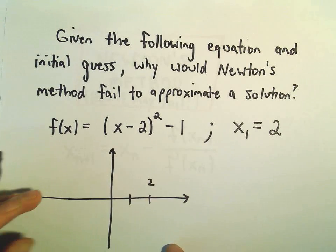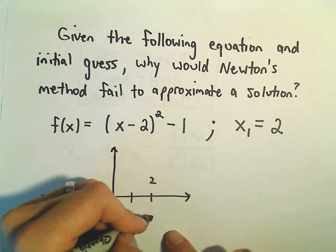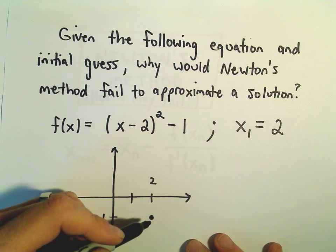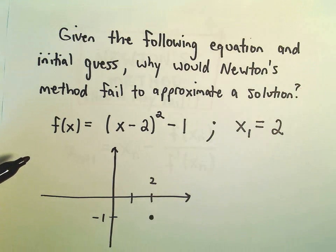Okay, so there's x equals 2, and then the minus 1 would move it down one unit. So that would be the vertex of our parabola. And it's going to cross the x-axis somewhere. I think we can almost figure out the answers here.